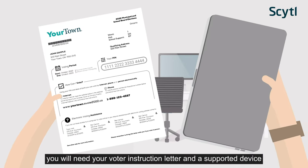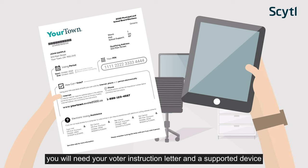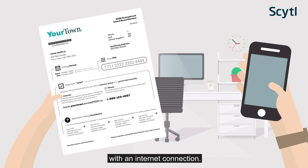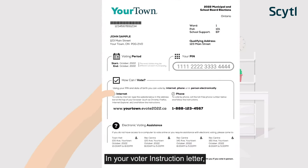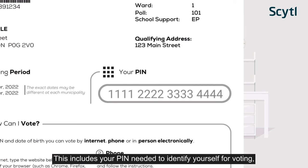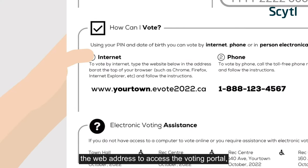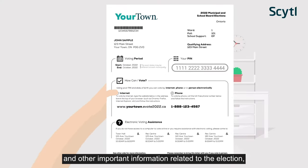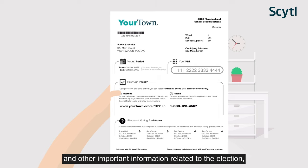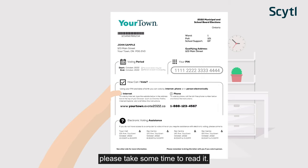For online voting, you will need your voter instruction letter and a supported device with an Internet connection. In your voter instruction letter, you will find the information required to access the system. This includes your PIN needed to identify yourself for voting, the web address to access the voting portal, and other important information related to the election. Please take some time to read it.